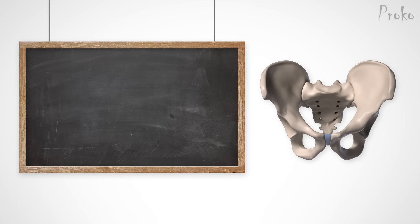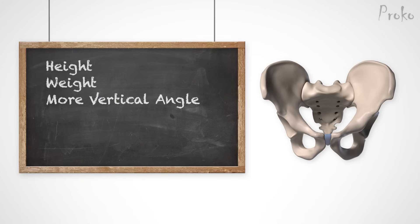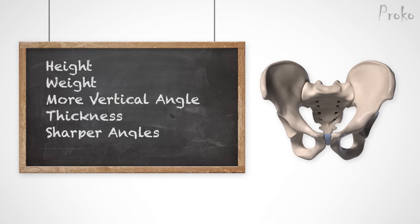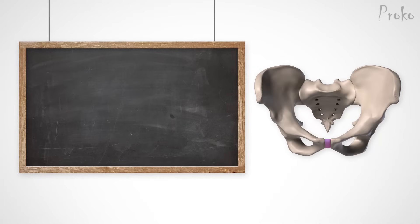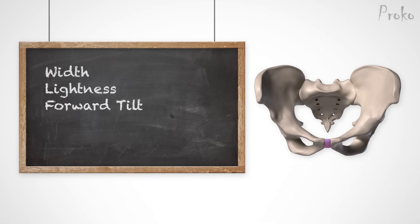To review: a male pelvis is characterized by height, weight, more vertical angle, thickness, sharper angles, and a smaller cavity. A female pelvis is characterized by width, lightness, forward tilt, thinness, and a larger cavity.